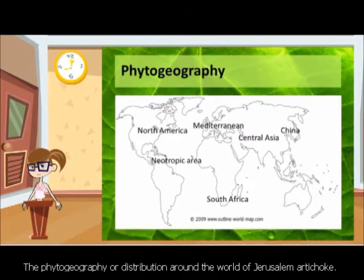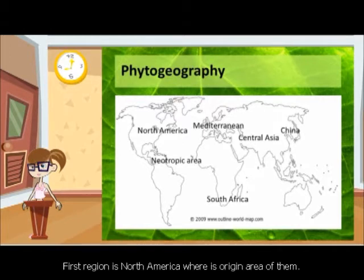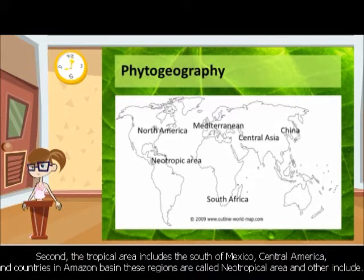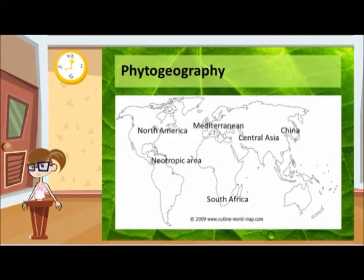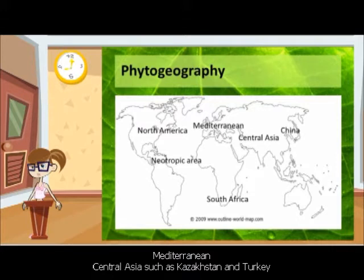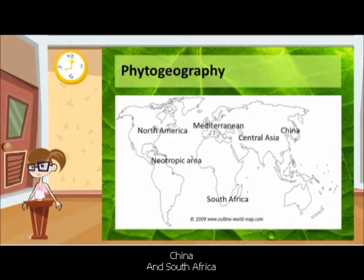The phytogeography or distribution around the world of Jerusalem Artichoke. Number 1: the first region is North America, which is the origin area. Number 2: the tropical areas include the south of Mexico, Central America, and countries in the Amazon basin. These regions are called neotropical areas. Number 3: Mediterranean. Number 4: Central Asia. And also South Africa.